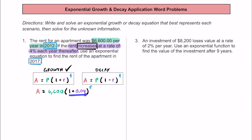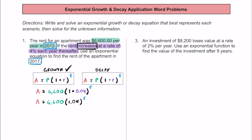We can go ahead and add what's in the parentheses — the base of the exponent. So the rent cost in 2017 is going to be equal to the original amount of $6,600 multiplied by 1 plus 0.04, which is 1.04 or 104%, raised to the power of 5 — compounded over 5 years. This would be a lot to do by hand, so you'd throw this into a calculator. Raise 1.04 to the fifth power first, then multiply by 6,600.